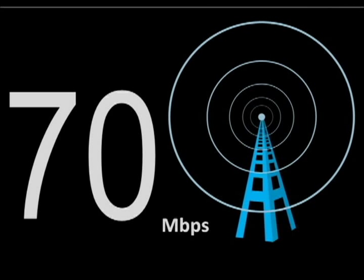WiMAX has a coverage of 30 miles and a speed of 70 Mbps. That was all about the different types of access networks and their technology. Thank you so much.